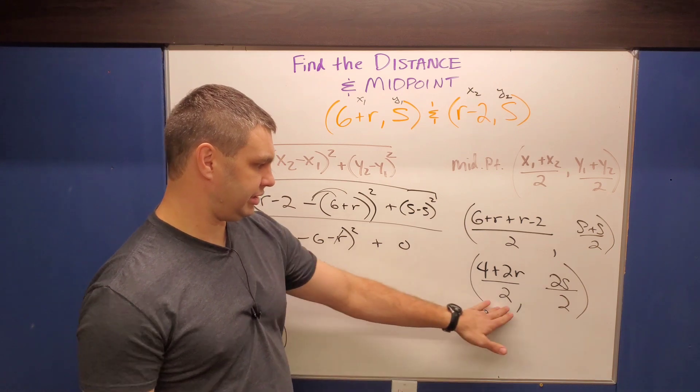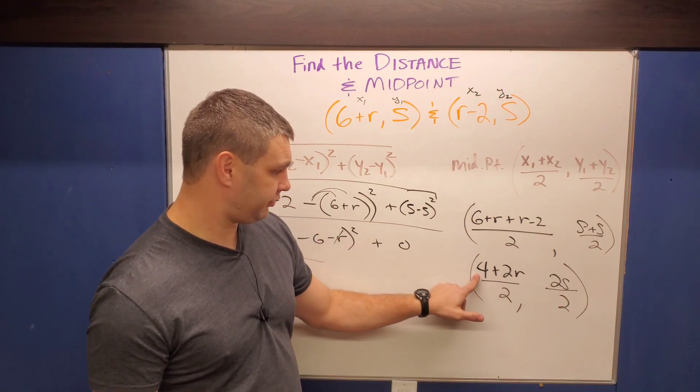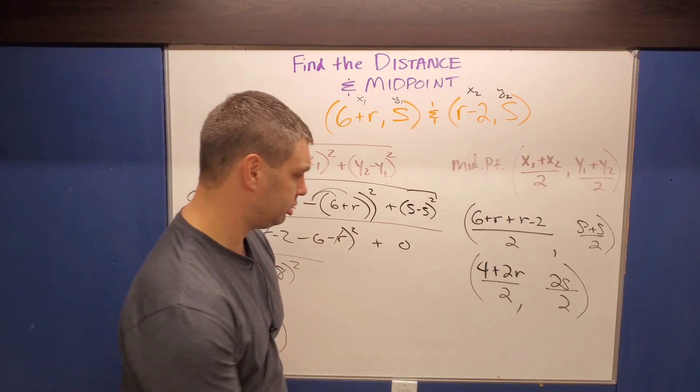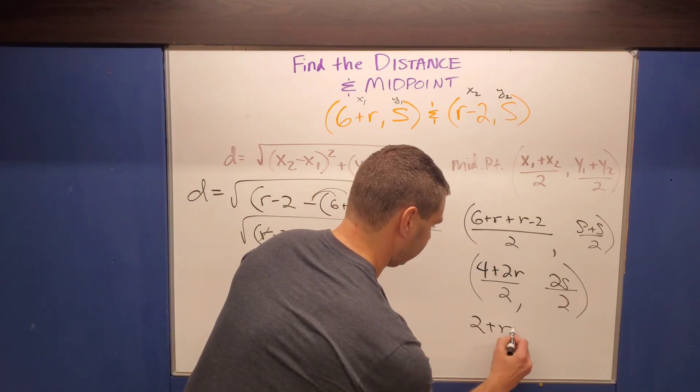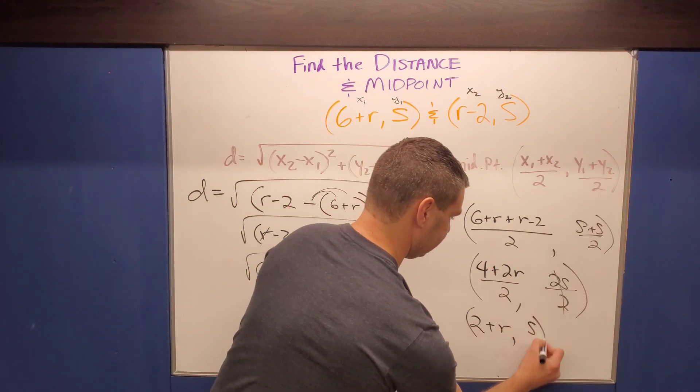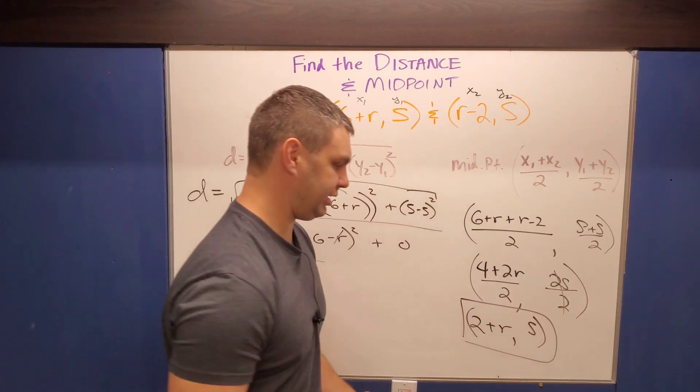And so if I deal with these, with the division here, four and two are both divisible by two. So we can just say, this is gonna be two plus R, two plus R, comma. And then same thing here, the twos would cancel, which is just S. And if you think about whatever variables those are, that makes sense, all right?